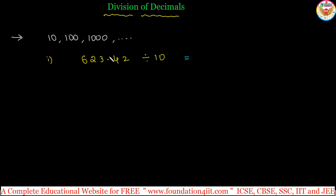As many zeros, that many places left side you have to shift. That means the answer is 62.342. So this decimal place shifts to the left side.